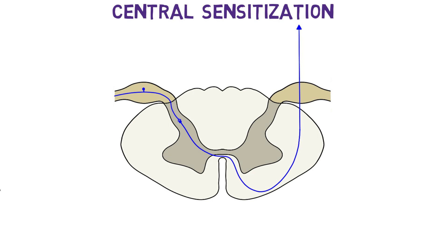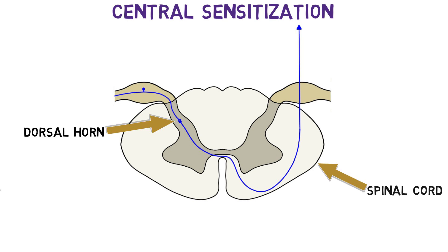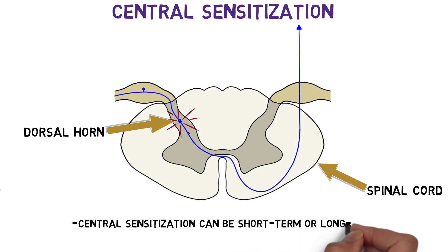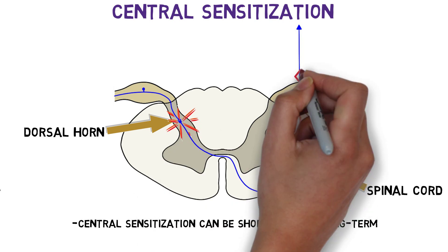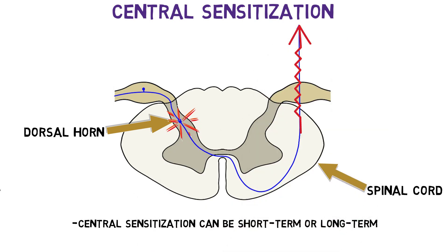Central sensitization is a rapid increase in the excitability of neurons in the dorsal horn of the spinal cord following high levels of nociceptor activity. This heightened excitability lowers the threshold for pain, increasing pain sensitivity. One short-lasting form involves increased neuron firing due to repeated stimulation of nociceptors, which can cause the perceived intensity of pain to increase temporarily. Longer-lasting sensitization resembles long-term potentiation that underlies memory consolidation and can lead to long-term changes in pain sensitivity.